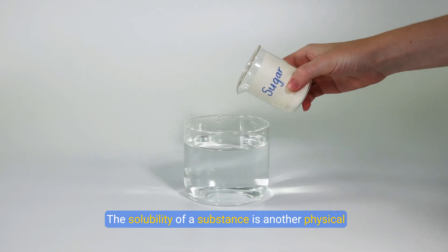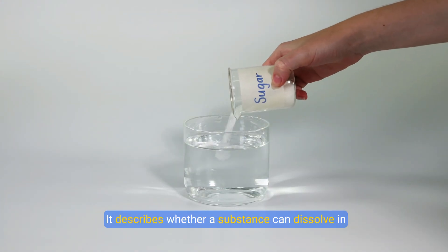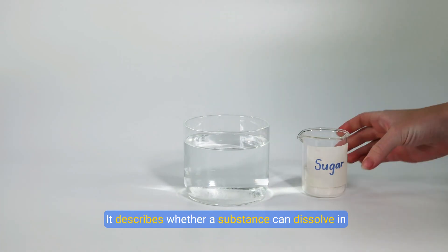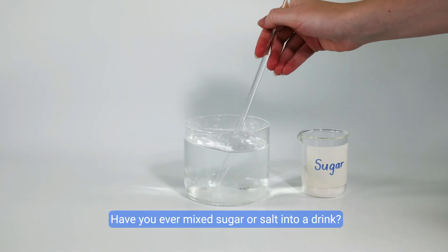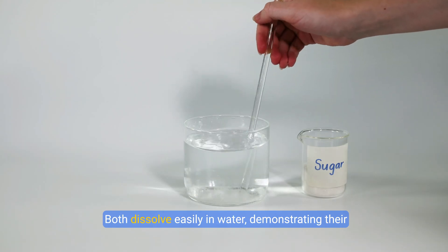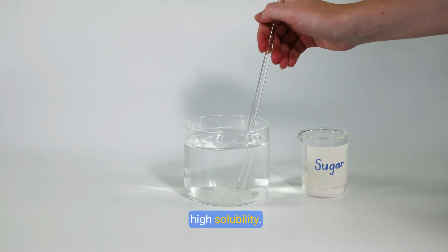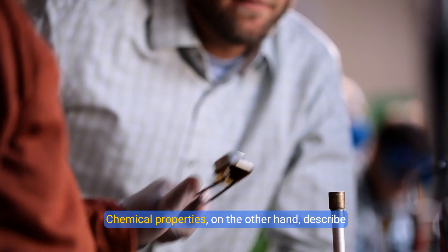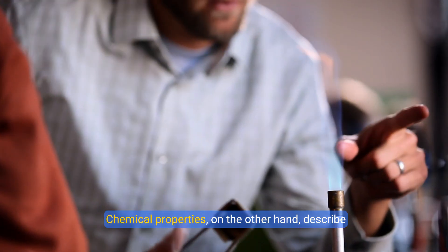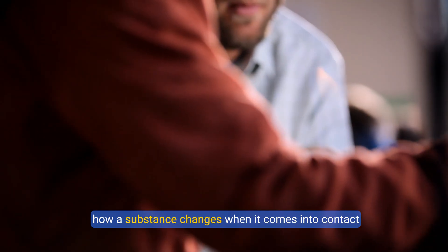The solubility of a substance is another physical property. It describes whether a substance can dissolve in other substances. Have you ever mixed sugar or salt into a drink? Both dissolve easily in water, demonstrating their high solubility, yet this doesn't change their chemical makeup.